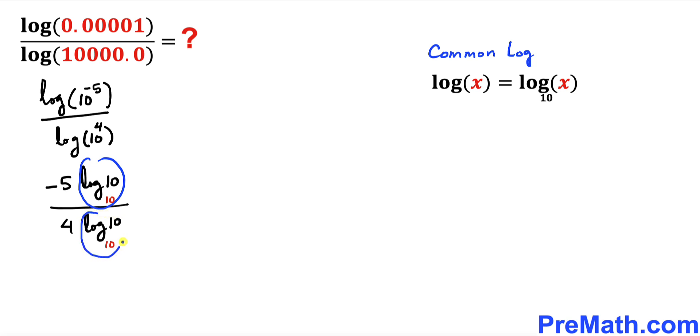Now let's recall another crucial factor. If the base and the argument are the same, then it's always going to be equal to 1. In our case, we have the same base and argument, so this log of 10 with the base 10 is going to be 1, and this at the denominator, log of 10 with the base 10, is going to be 1 as well.